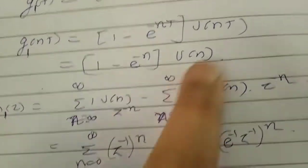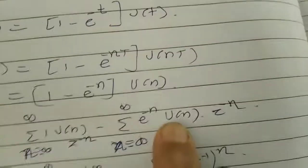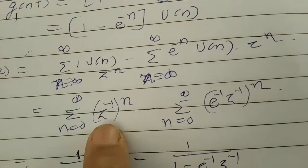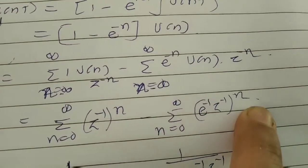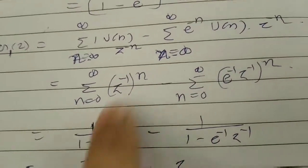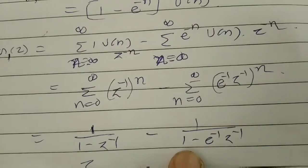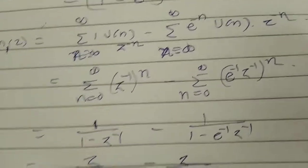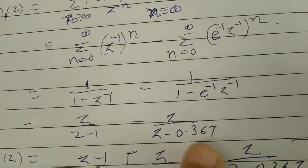With sampling time considered as 1, the discrete signal becomes (1 minus e raised to minus n) times u(n). Taking the Z-transform, the summation from n=0 to infinity gives us z raised to minus 1 to the n, minus e raised to minus 1 times z raised to minus 1 to the n. Using the standard Z-transform formula, the result is (1 minus e raised to minus 1) divided by (1 minus e raised to minus 1 times z raised to minus 1).